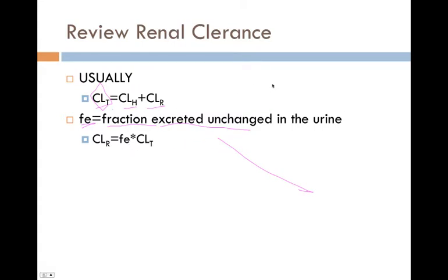So if we take the fraction, this is going to be between 0 and 1. Zero means none excreted in urine as parent drug, and 1 meaning 100% appears in the urine as parent drug, as the original drug.